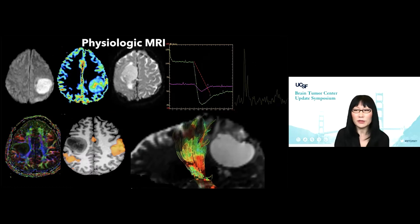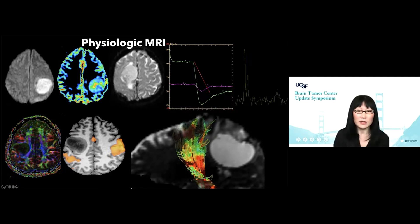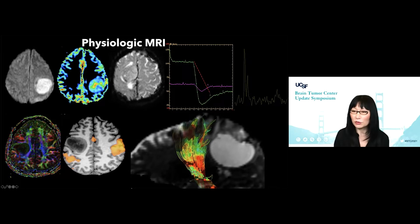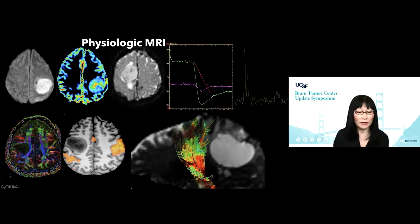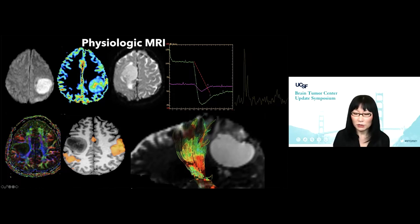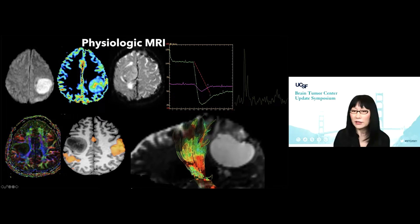But we also do some fancy physiologic MRIs as well — diffusion, perfusion, and dynamic perfusion imaging that generates a dynamic susceptibility curve. We also do spectroscopy, fractional anisotropy map, functional MRI, and diffusion tensor imaging to lay down the tracks for our surgeons who are operating very close to eloquent structures, such as a descending corticospinal tract.